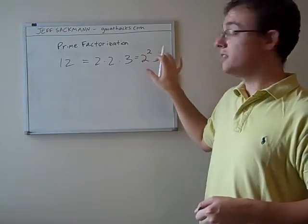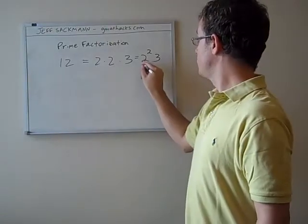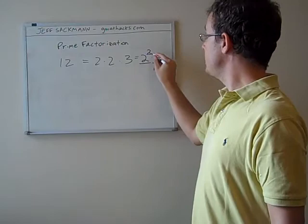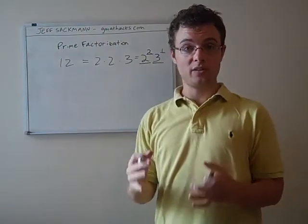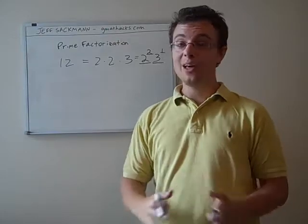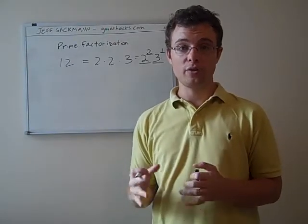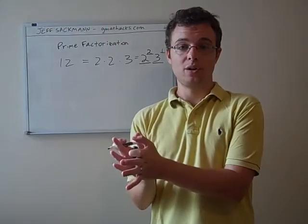Often we'll write this in exponent form. So we have 2 squared times 3 to the first power. We can do that for any number. Some numbers are more difficult than others, and that's where prime factorization comes in.